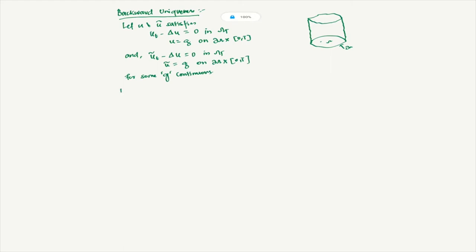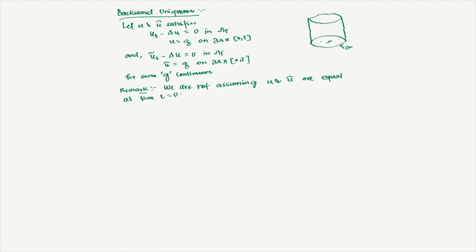Now, one small remark here. I am starting out with two functions u and u-tilde such that u satisfies this equation and u-tilde satisfies the same equation. Note that we are not assuming u and u-tilde are equal at time t equals 0. So they may be different at t=0. We just know that on the side boundary, u is g and u-tilde is g — that is all. On this boundary they are equal, but not necessarily at t=0.